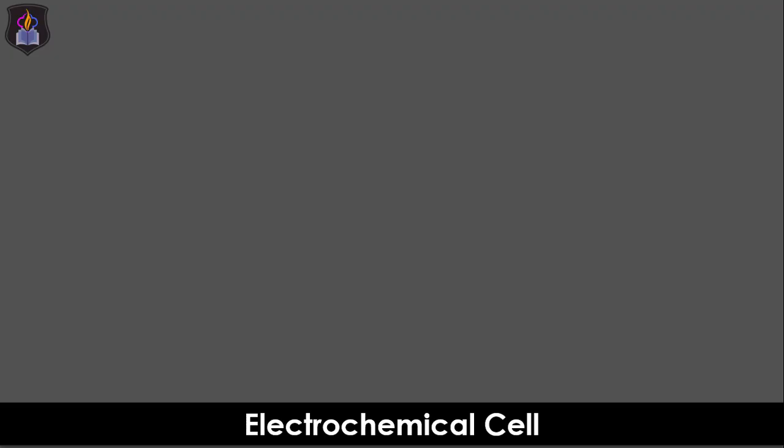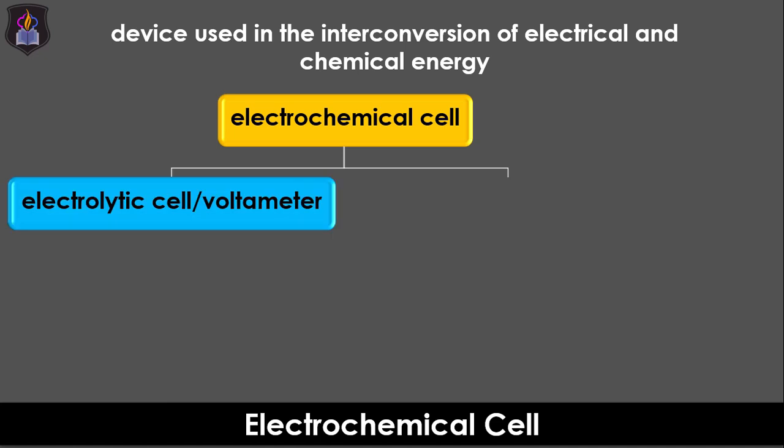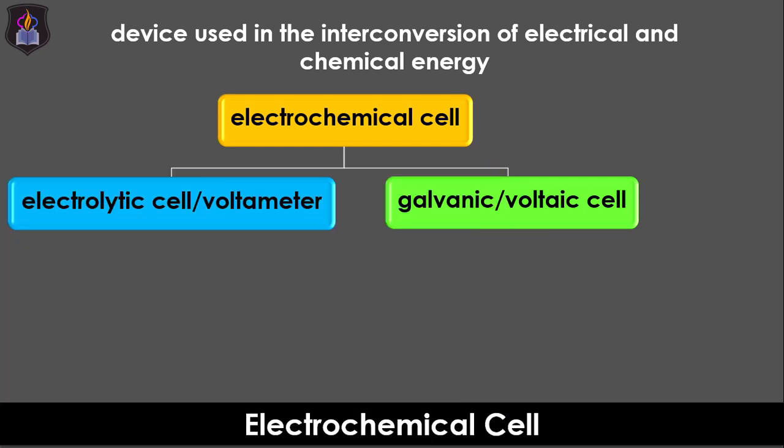An electrochemical cell is generally a device used in the interconversion of electrical and chemical energy. It can either be an electrolytic cell or voltameter or a galvanic or voltaic cell. To learn more about electrolytic cells check the link in the description. Our focus in this video shall be on the galvanic cells.